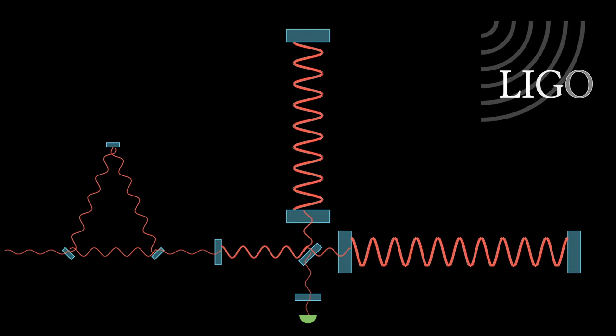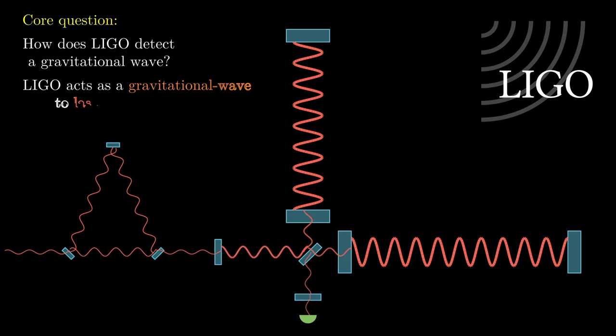This is LIGO, the Laser Interferometer Gravitational Wave Observatory. At LIGO, we use lasers and mirrors to detect gravitational waves, but the core question is, how? Well, the short answer is that we take a gravitational wave incident on the detector and convert it to laser power that we can detect.